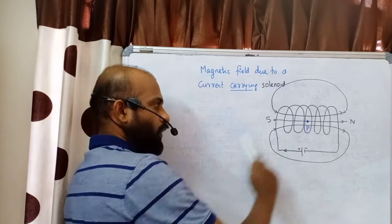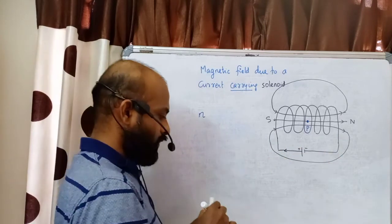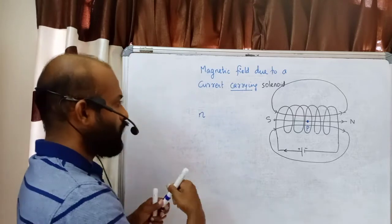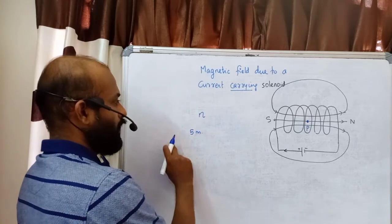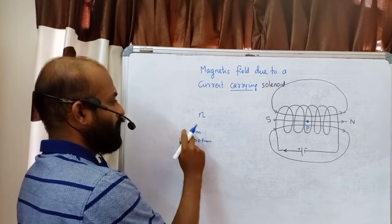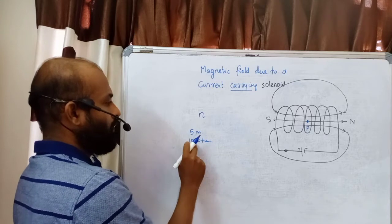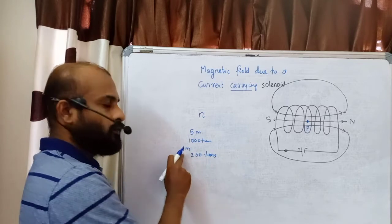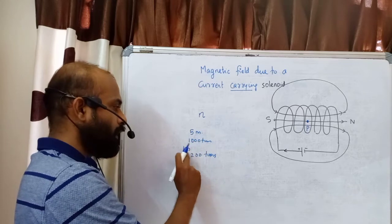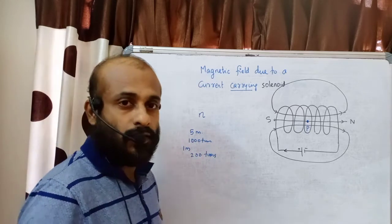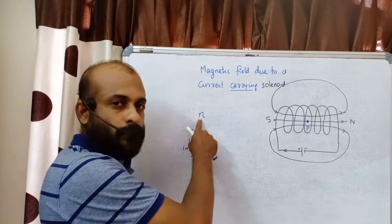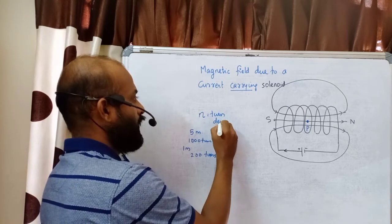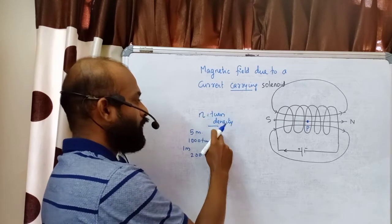Let small n be the number of turns per unit length, also called turn density. For example, if the length of the solenoid is 5 meters and there are 1000 turns, then there are 1000/5 = 200 turns per meter. So n is the number of turns per unit length — an important quantity for this derivation.